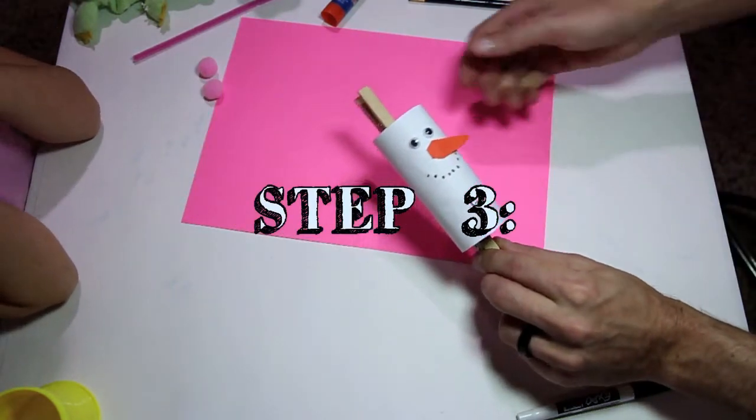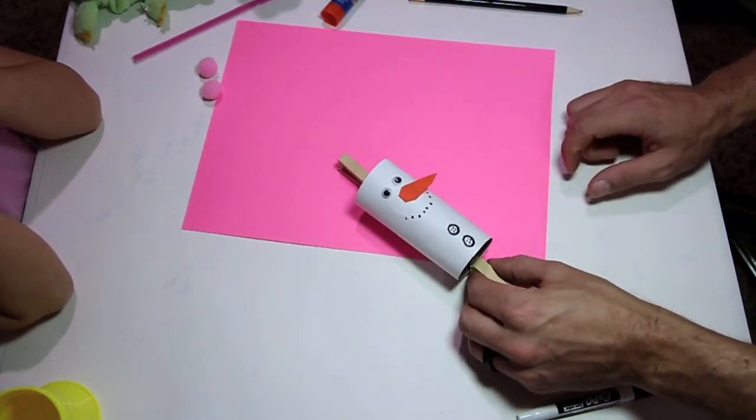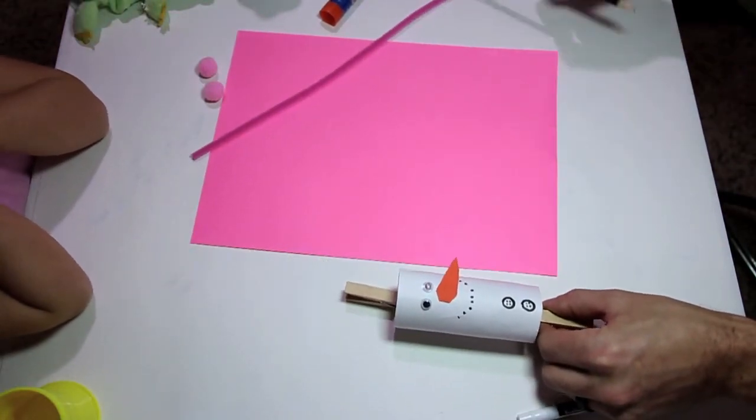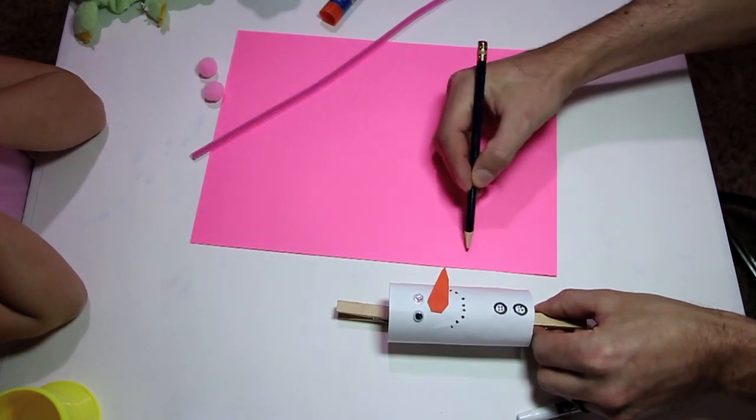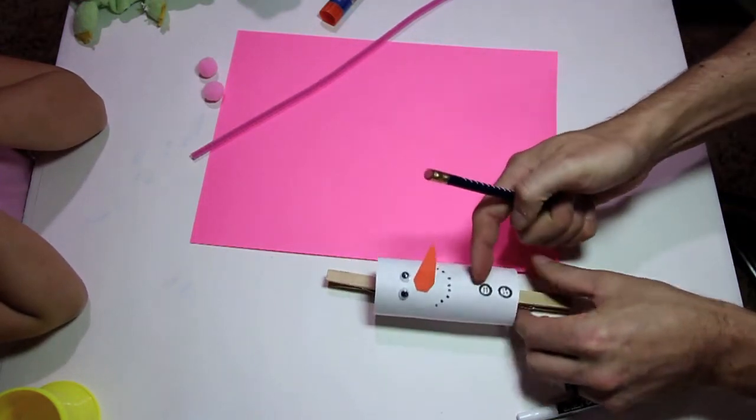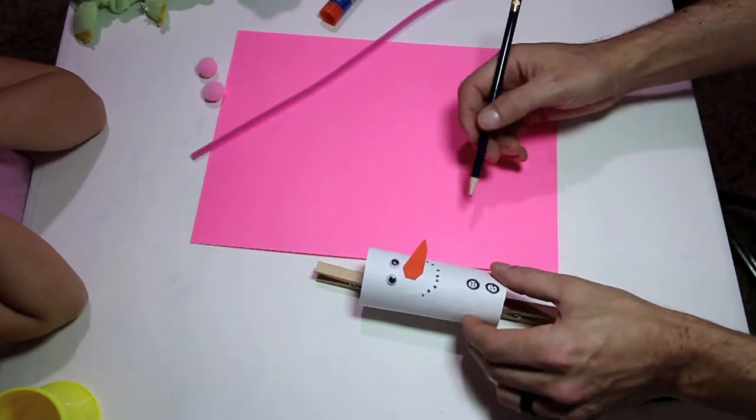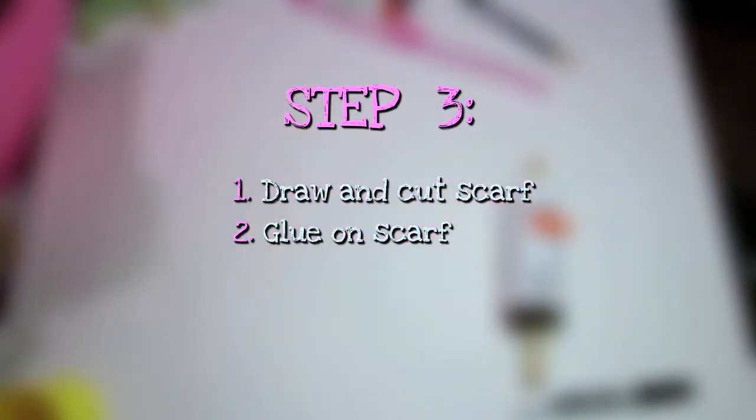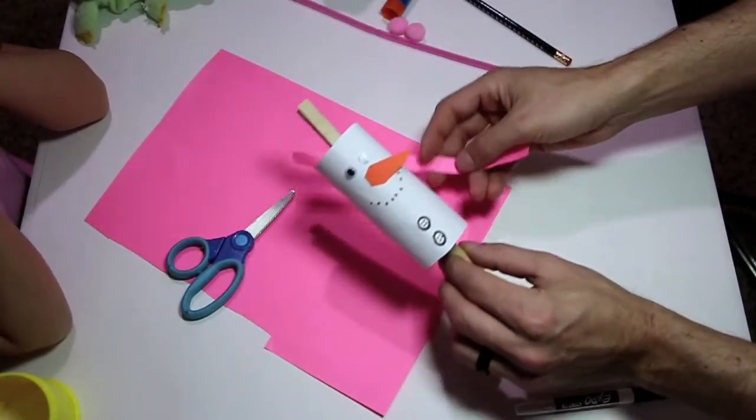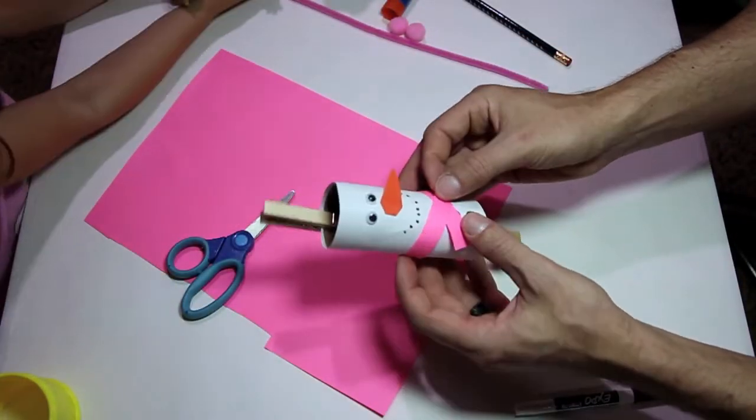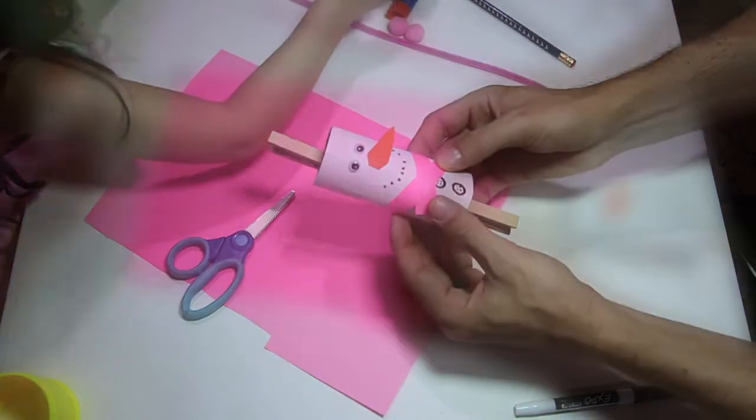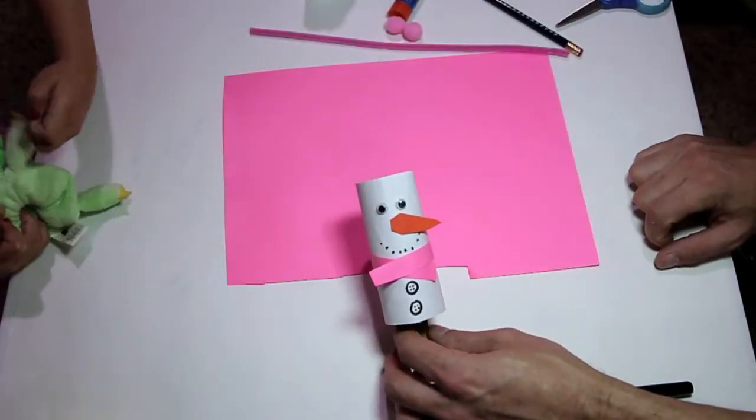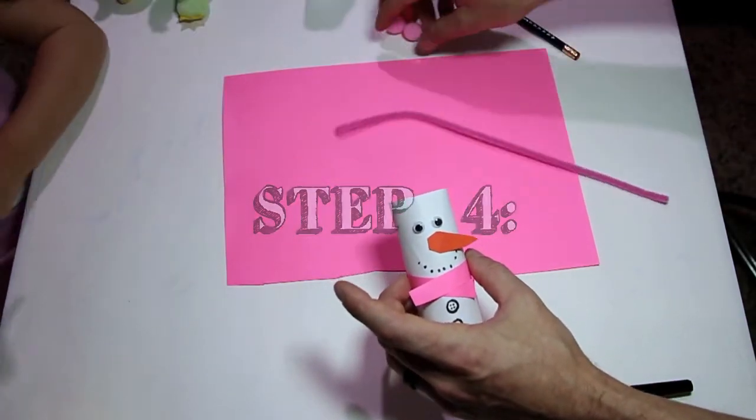In step three, you're going to make the scarf. We've chosen this to be a girl snowman, hence all the pink. Draw a rectangle on your scarf paper that needs to wrap around with a little bit of overlap in the front. You can make it longer to start with and then cut it down. Now glue it around and overlap it. All right, now our scarf is glued on, and that completes step three.